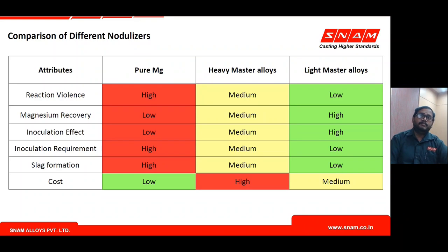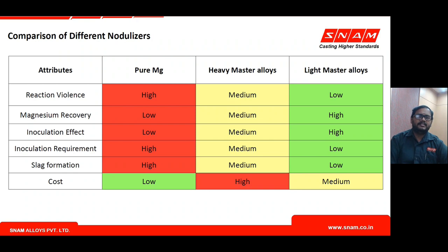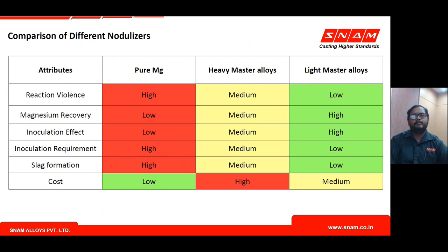The comparison also covers inoculation effect — whether the alloy provides inoculation or demands additional inoculation — slag formation, since magnesium is a slag-forming element, and cost, which depends on the amount of material required to achieve the desired magnesium recovery and meet the required casting properties.